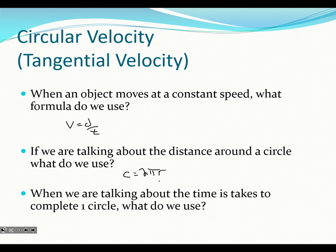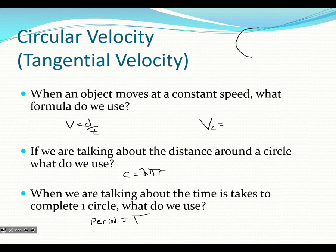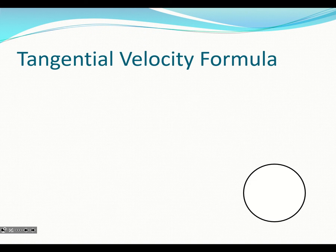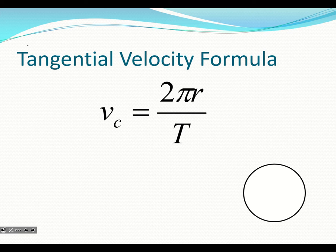And when we're talking about the time it takes to complete one circle, that's our period, T. So if we want to find the velocity of something moving in a circle, instead of distance we use circumference, and instead of time we call it period — the time it takes to complete one circle. So we have a brand new formula: vc equals 2 pi r over T, but really it's just d over t.